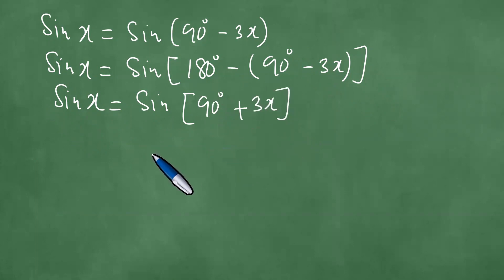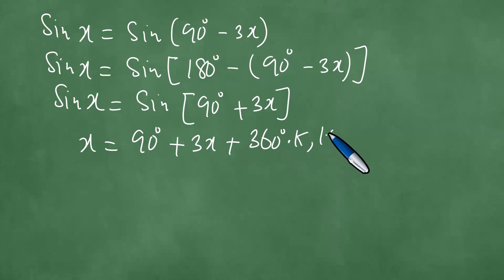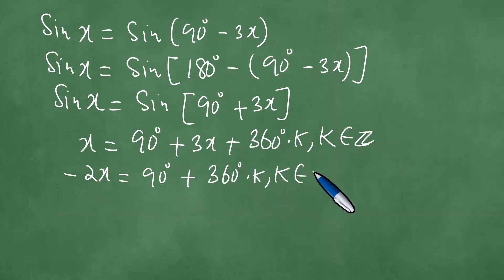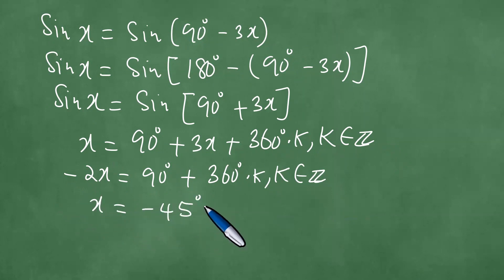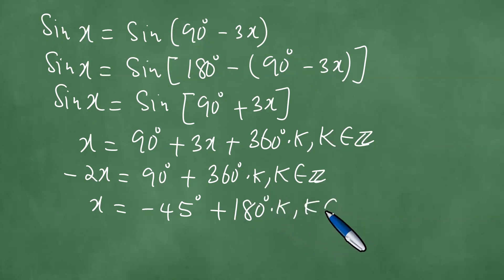Since 180 degrees minus 90 degrees is 90 degrees plus 3x, this means x equals 90 degrees plus 3x plus 360 degrees times k, where k is an element of Z. Dividing both sides by negative 2 gives minus 45 degrees. We can maintain this as plus, since dividing 360 by minus 2 gives 180 degrees times k, where k is an element of Z.